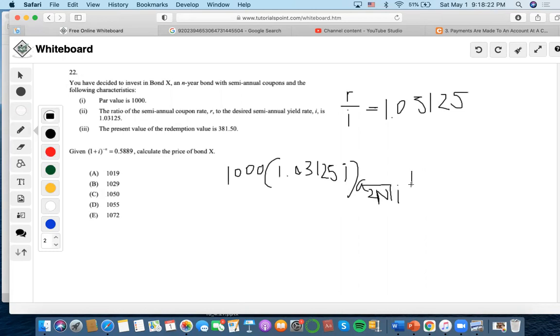To i plus the redemption value. It says that the present value of the redemption value is 381.50, so we don't even have to discount the redemption value anymore. It seems like it's already discounted for us.